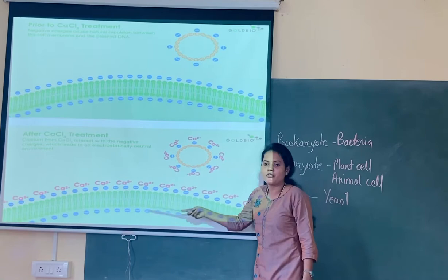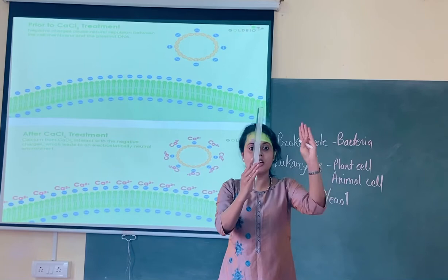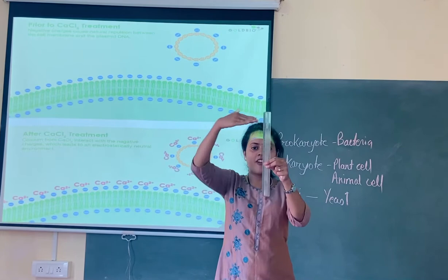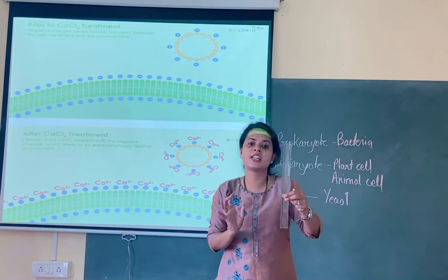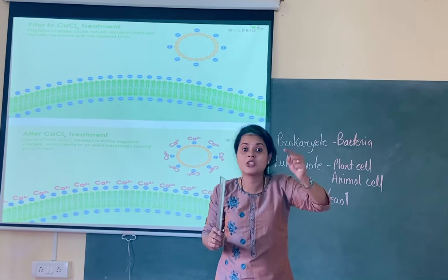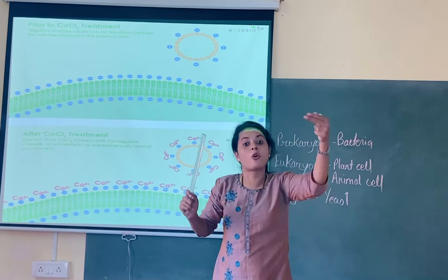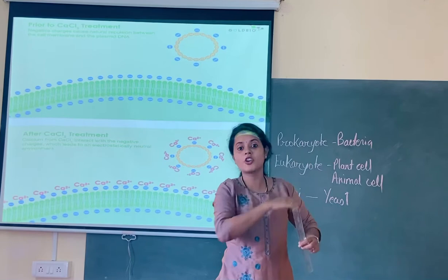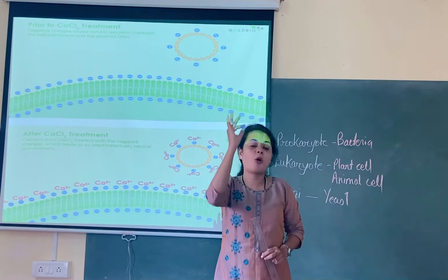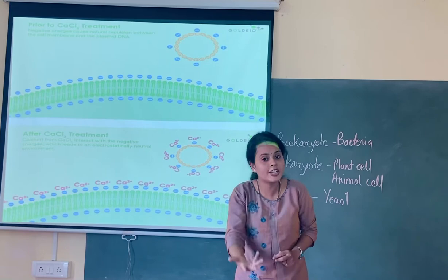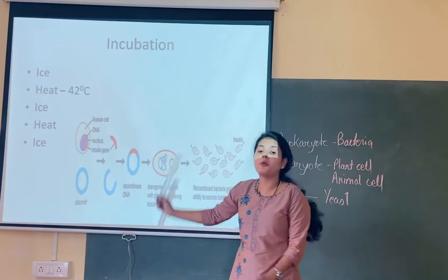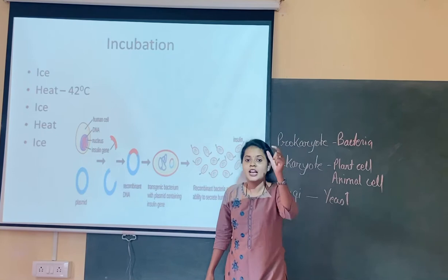The vector has now entered into the cell. So this is the cell membrane, this is the inner portion of the cell having a nucleus, and the gene of interest has entered through the calcium ion-increased permeability. Now, that gene of interest which is present inside the cell has to incorporate into the genome of the bacteria. How is that possible? That is not so easy. If it just goes inside directly, the gene of interest will not incorporate into the genome of the bacteria. The second important step is incubation with heat shock.